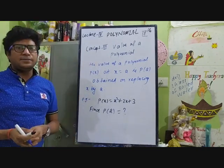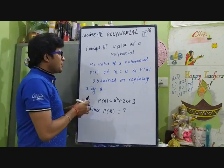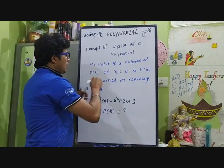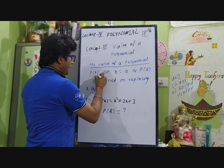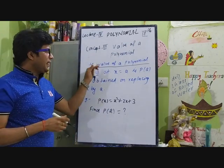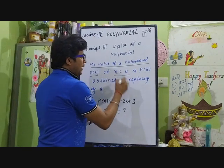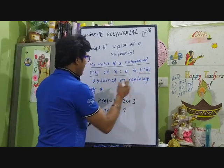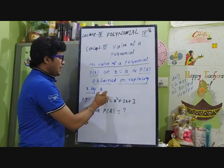Concept 3 is the value of a polynomial. The value of a polynomial p(x) at x = a is p(a), obtained by replacing x with a.